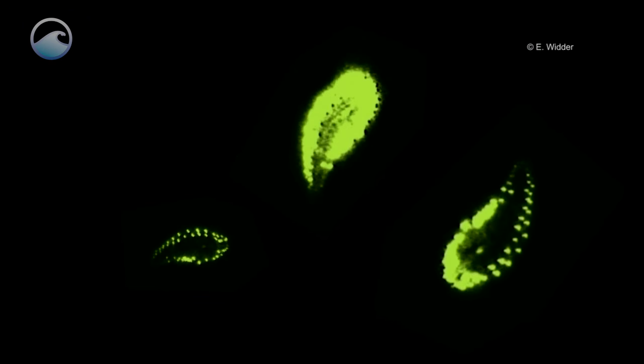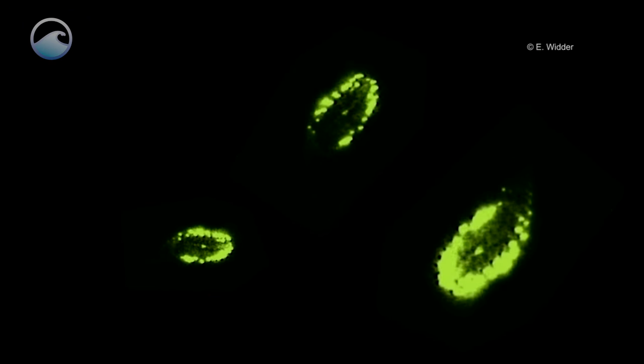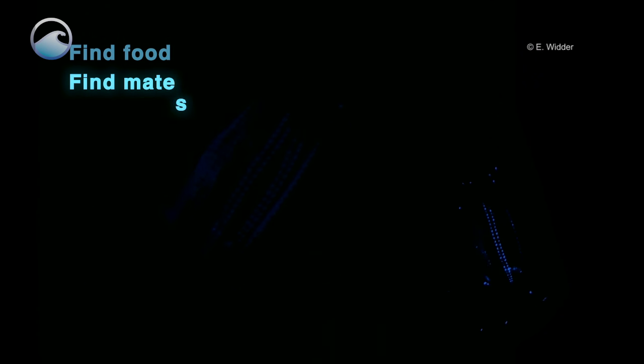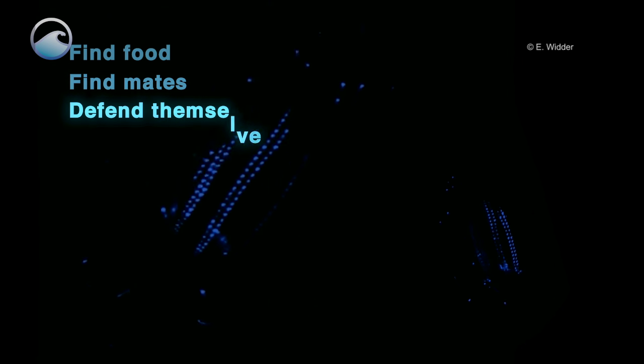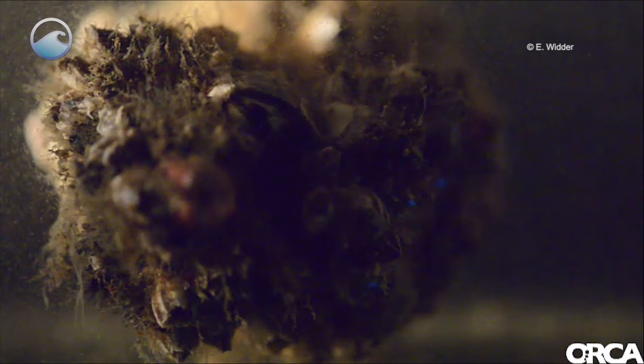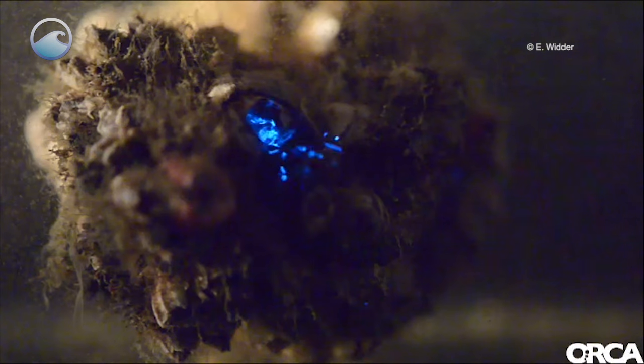All of the things that animals have to do on land, animals in the ocean have to do. They have to be able to find food, they have to be able to find mates, and they have to be able to defend themselves against predators. Bioluminescence plays key roles in all of those things.